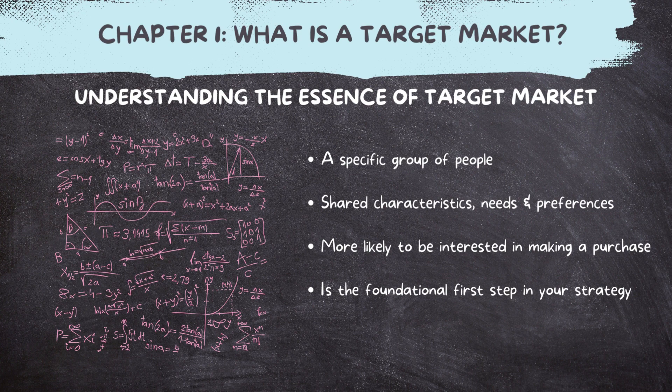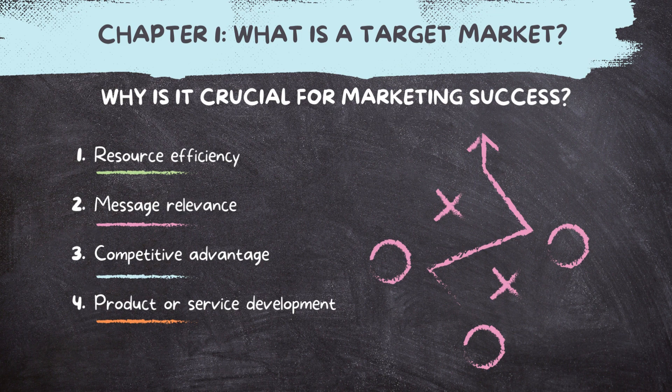But why is it crucial for marketing success? We'll cover that in four parts. Number one is resource efficiency. Without a defined target market, your marketing efforts may be scattered, and resources may be wasted on reaching people who have little or no interest in your offerings. This can lead to inefficiencies in budget as well as time spent. Number two is message relevance — by knowing your target market, you can tailor your marketing messages to speak directly to their needs and desires, making your marketing material more compelling and persuasive.